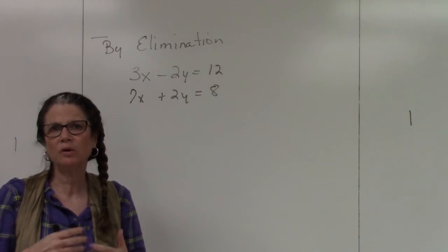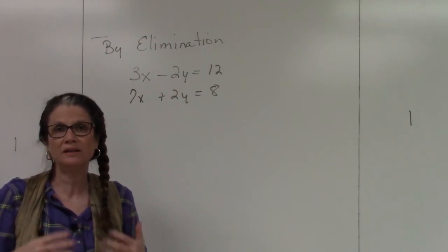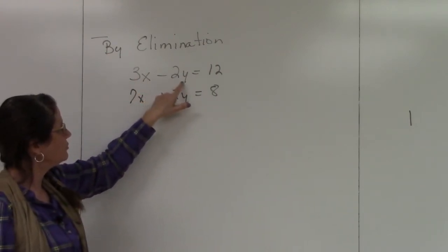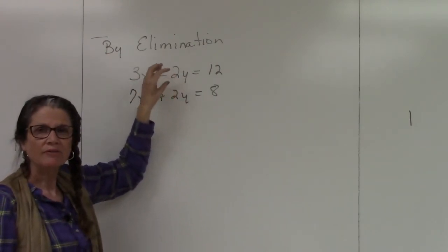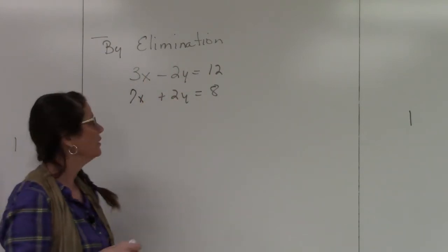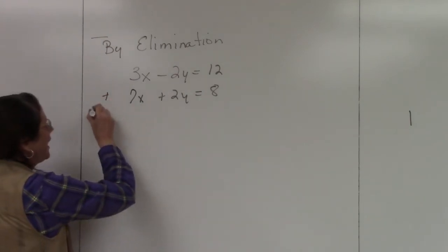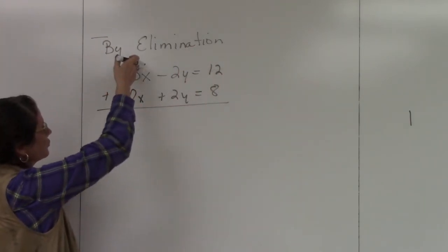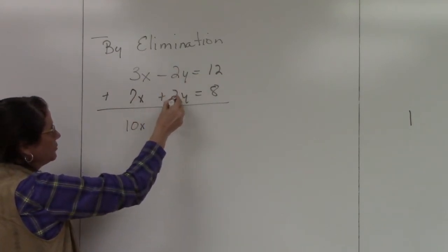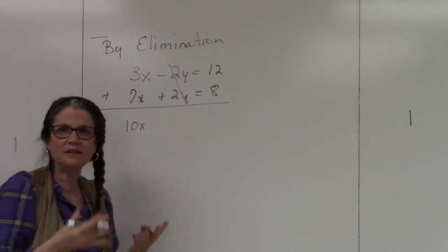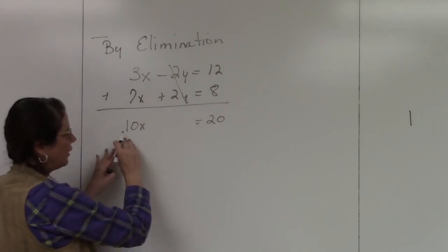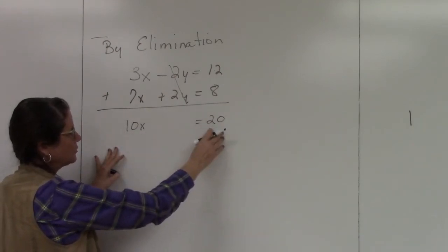When it's set up like this, then we can do what's called elimination. So what we're doing is we're looking for one of the variables that we can literally eliminate. We just get rid of it. Well when I look at this, when I have a negative 2y and a positive 2y, if I have the same thing, one negative, one positive, then I can eliminate that by adding. So if I go through and I add these columns, 3x plus 7x is 10x, negative 2y plus 2y those cancel, so that's the elimination part, and then 12 plus 8 is 20.